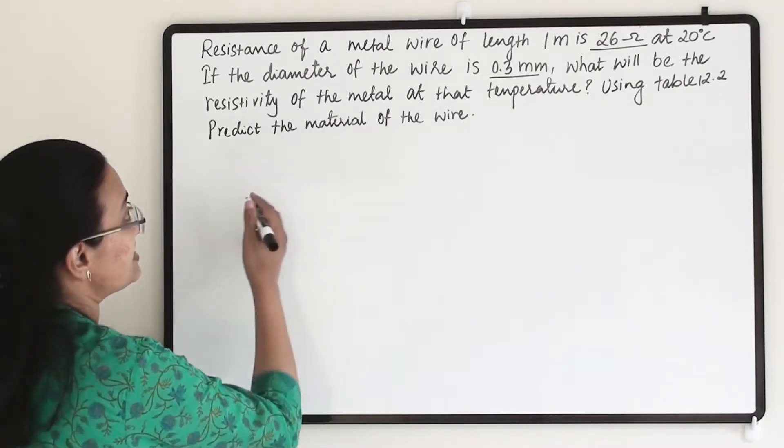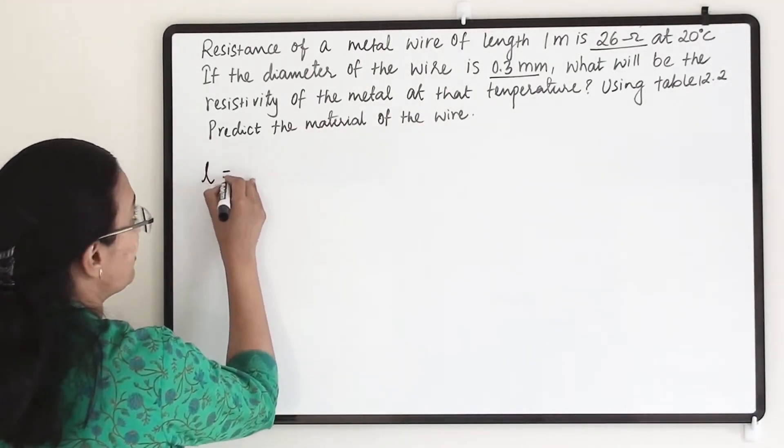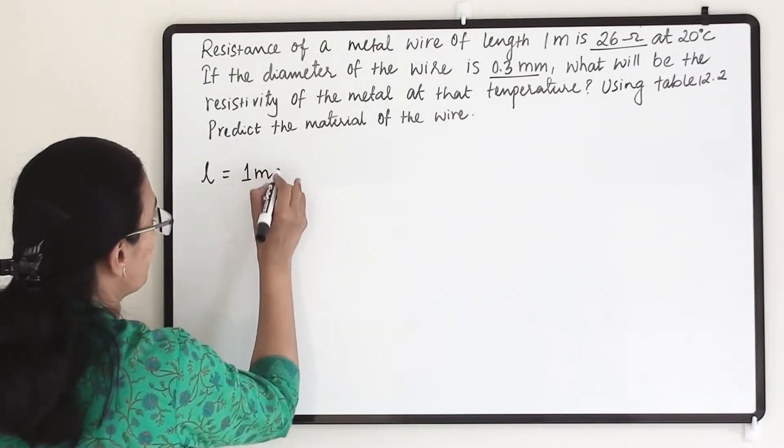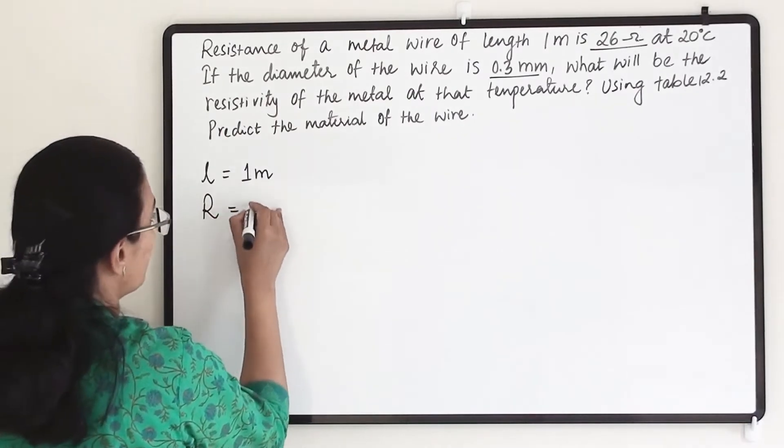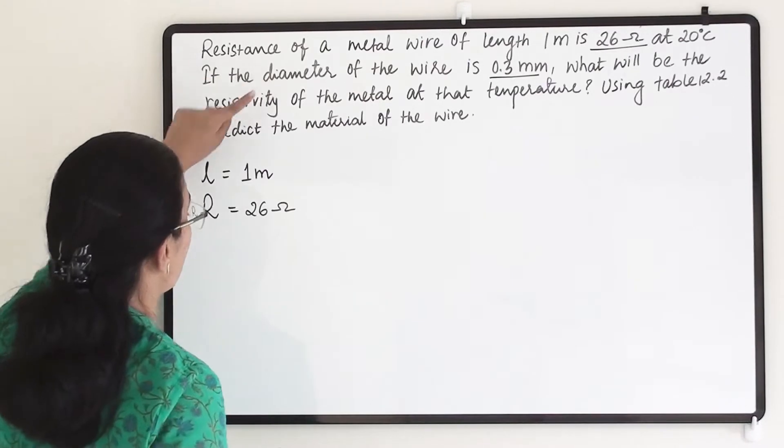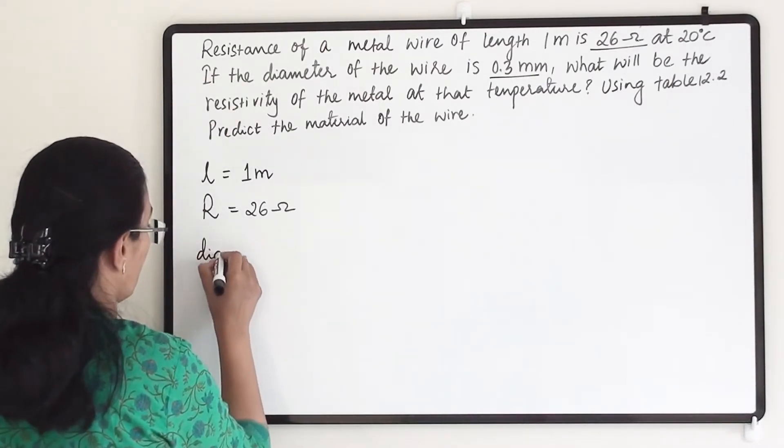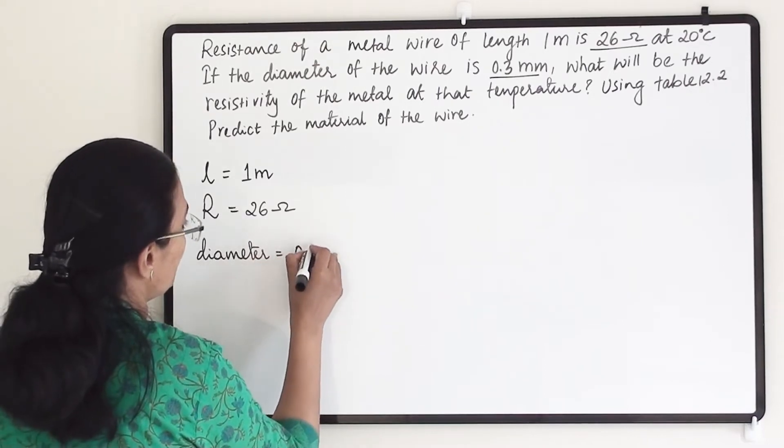So what details they have given us: length L equals 1 meter, resistance R equals 26 ohm, and diameter equals 0.3 mm.